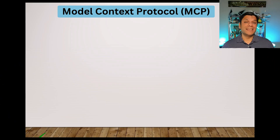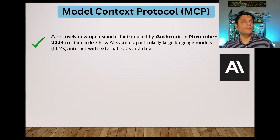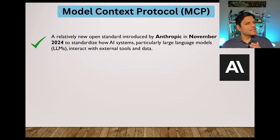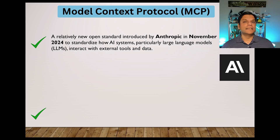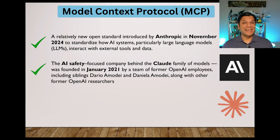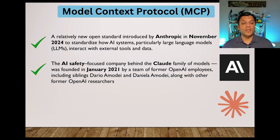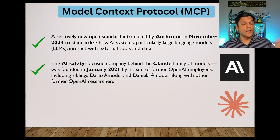Anthropic is fairly new. It started off in November of 2024 to standardize how AI systems — specifically those who build large language models — should interact with external tools and data. That is where the MCP kicked in as well. One of the key things Anthropic is recognized for is AI safety. It is one of the first companies to actually introduce the Claude family of models back in January of 2021, and it was actually led by a team of ex-employees of OpenAI.